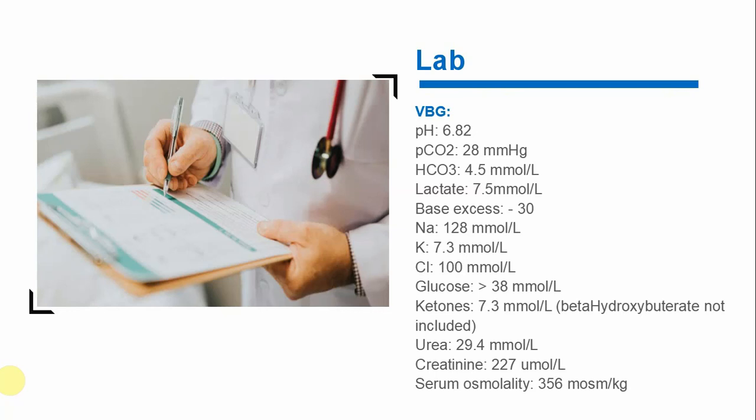Lactic acid was 7.5, so she had lactic acidosis as well. The sodium level was mildly low, but the corrected sodium was high. Potassium was moderately high at 7.3, requiring close monitoring. Initial glucose was more than 38; the actual blood sugar level was 83 mmol/L. The ketone — measured as acetoacetic acid since beta-hydroxybutyric acid could not be checked at that moment — was 7.3.